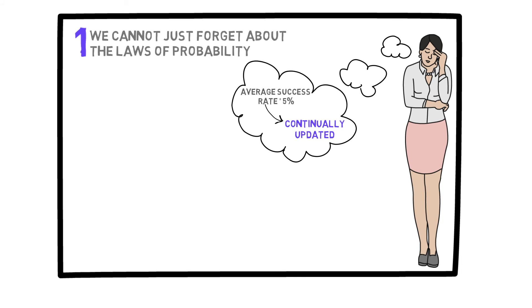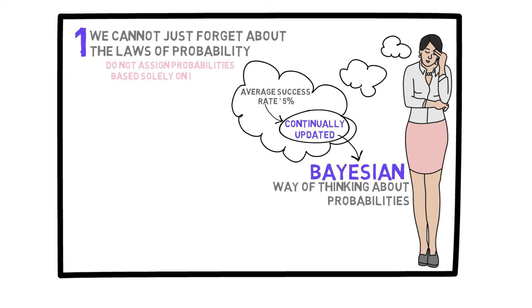Later on, we will talk about specifically how to do such things. This updating of probabilities based on conditional probabilities, in fact, is the Bayesian way of thinking about probabilities. So the point here is that just because probabilities in these situations are subjective and rely on your degree of belief, you should not just intuitively assign random probabilities based solely on such intuitions. You should also be careful about the laws of probability.